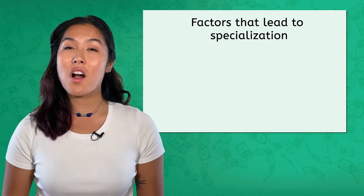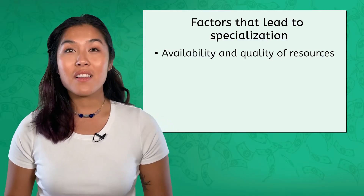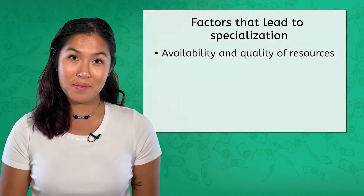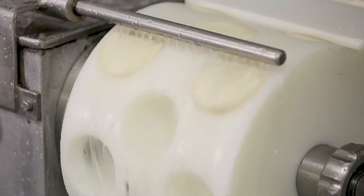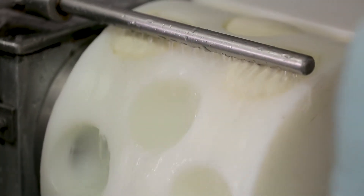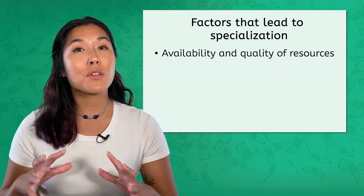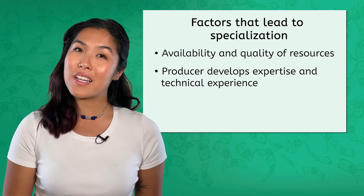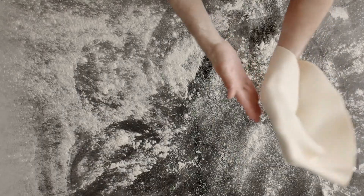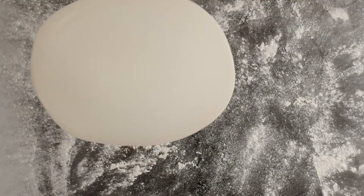It's important to recognize that there are several factors that lead to specialization. Remember how availability and quality of resources had a huge impact on production? Well, that applies to specialization as well. Uncle Vito's cousin makes top-quality fresh mozzarella cheese that Uncle Vito uses for his pizza — this connection and access to cheese gives Uncle Vito an advantage in producing pizza. Specialization also occurs because a producer develops expertise and technical experience in producing a good. Uncle Vito has worked in pizza restaurants since he was a teenager, and he has taken everything he's learned over all those years to make his restaurant one of the best pizza restaurants around.